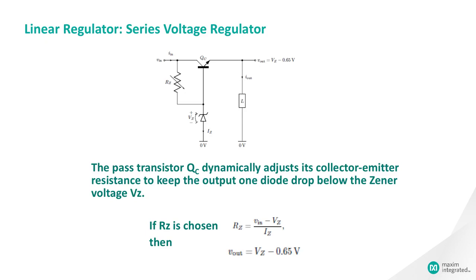Adding an emitter-follower stage to the simple shunt regulator forms a simple series voltage regulator and substantially improves the regulation of the circuit.